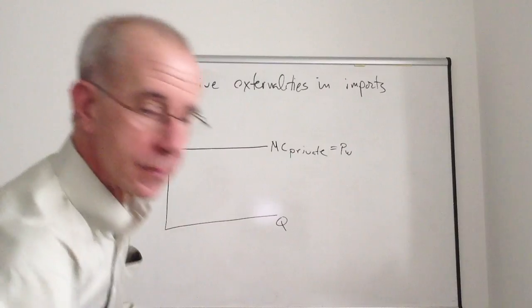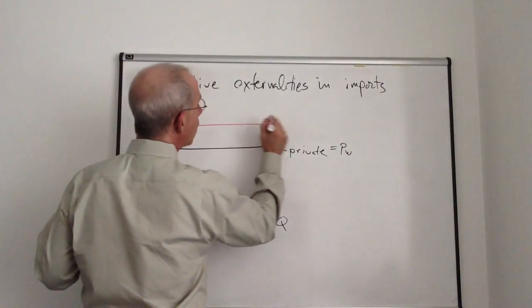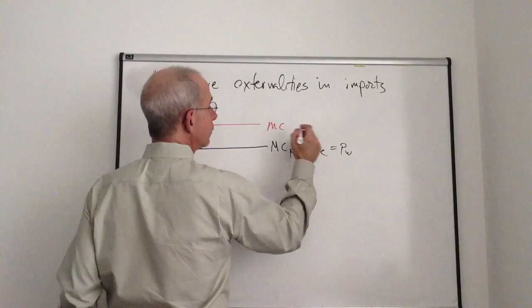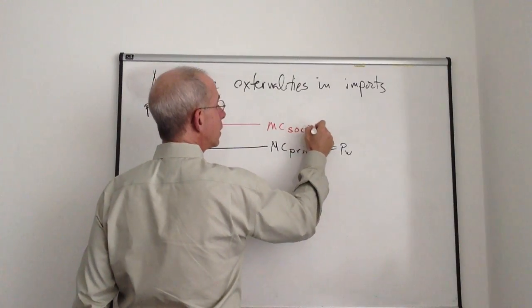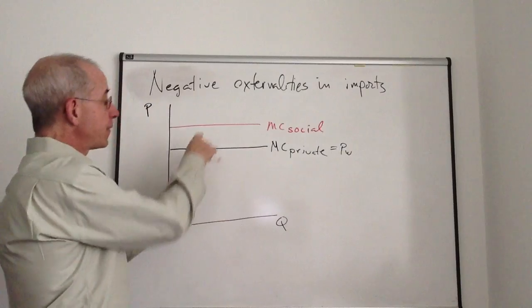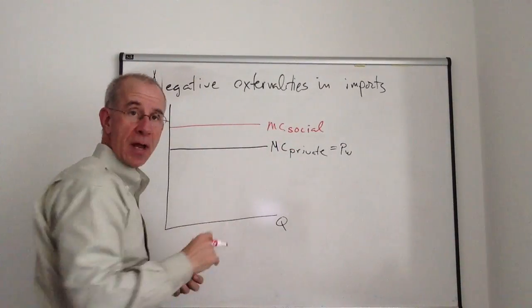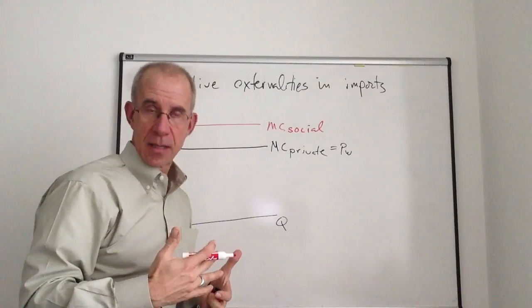But where there is a higher marginal cost of production from a social standpoint. So the difference between these two, the difference between the social cost and the private cost, are these externalities.